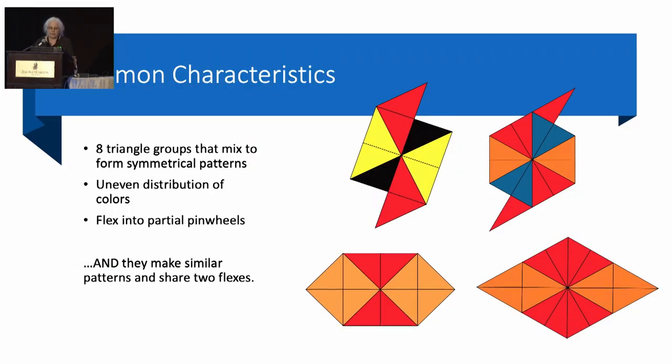And here's some of the things that they have in common. They both have eight colors. And the colors have an uneven distribution in the same way. So each of these flexagons has four colors that have eight triangles each, two colors that only have two triangles each, and two colors that have all the triangles they need to fill the polygon. They both make those pinwheel shapes, and they flex the same way. They share two flexes, and they make very similar patterns.